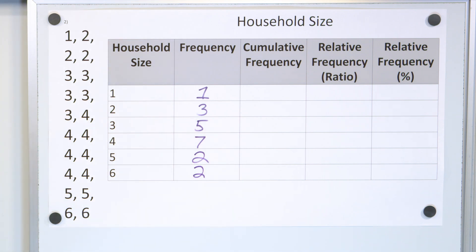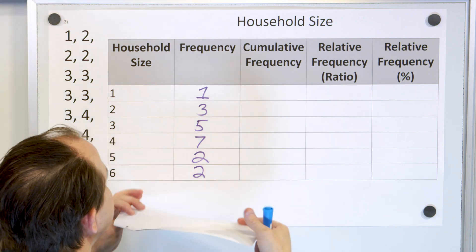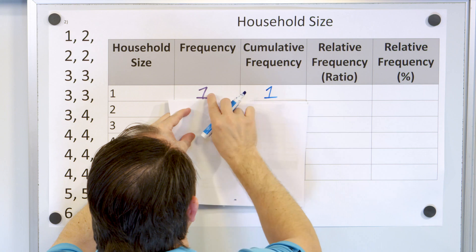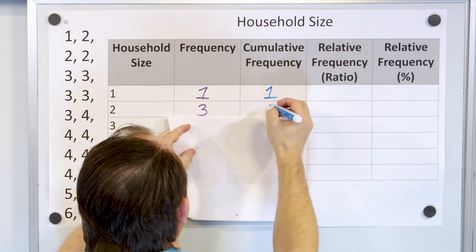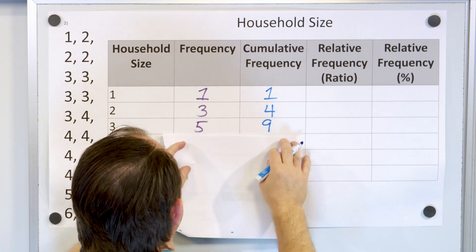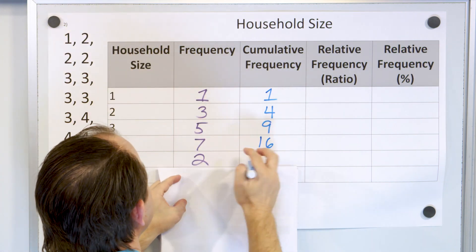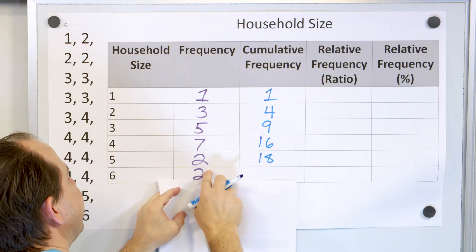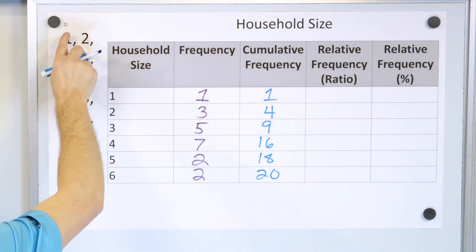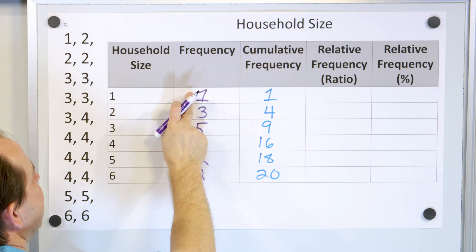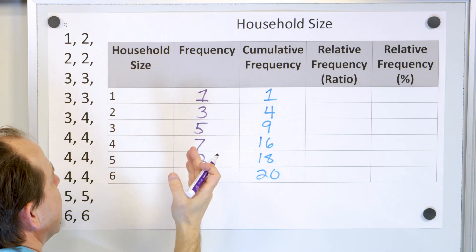All right so then I turn my attention to the cumulative frequency. Remember the cumulative frequency is a running total of this column so we always start out by matching the first element here and then we add up one plus three is four and then this was four plus the five more is nine and then this nine plus the seven more that worked out to be 16 and then we have this 16 plus two more is 18 and then the 18 here plus two more is 20 so the total of all of the respondents if you count them 1, 2, 3, 4, 5, 6, 7, 8, 9, 10, 11, 12, 13, 14, 15, 16, 17, 18, 19, 20 people responded in total.